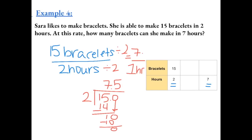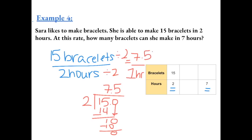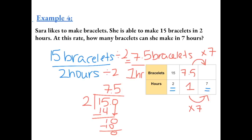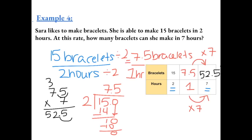So she makes 7 and a half bracelets in 1 hour. We put this into our ratio table. To find how many bracelets she makes in 7 hours, we multiply by 7. 7 and a half times 7: 7 times 5 is 35, 7 times 7 is 49, plus 3 is 52. With one digit after the decimal, our answer is 52.5. She could make 52 and a half bracelets in 7 hours.